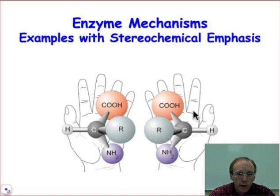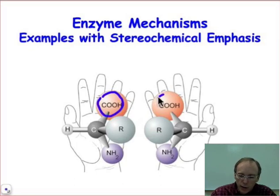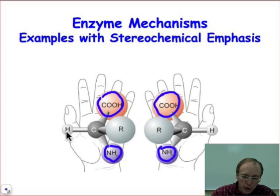The subtle differences are illustrated in this picture shown here, where the left and right hand — two different chiral objects that can serve as hosts for enantiomeric molecules — recognize their guest molecule in exactly the same way. Notice that the carboxylic acid is recognized by the fingertips, the amino group is recognized by the palm, and the hydrogen is recognized by the thumb.